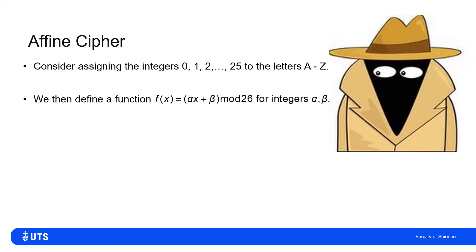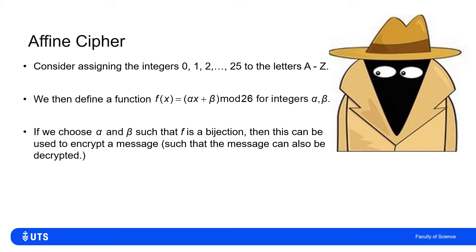Once we have this, we can take the number corresponding to each letter, multiply it by some integer alpha, add on another integer beta, and calculate the remainder once we've divided by 26. We can choose alpha and beta, and a different choice will give us a different mapping of each original number to a new number, but we would like that to be a bijection.